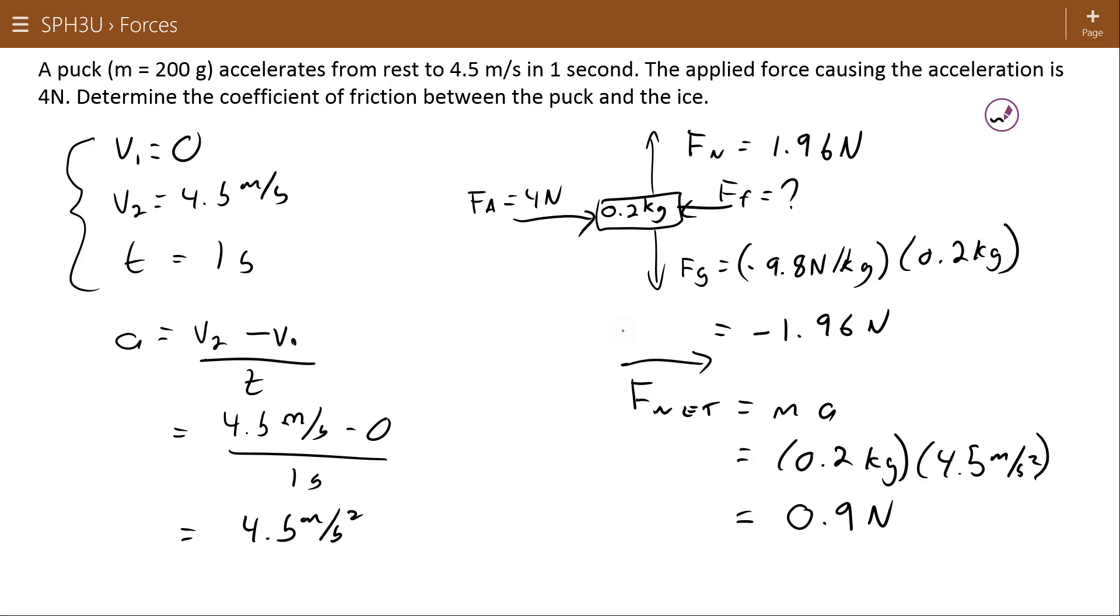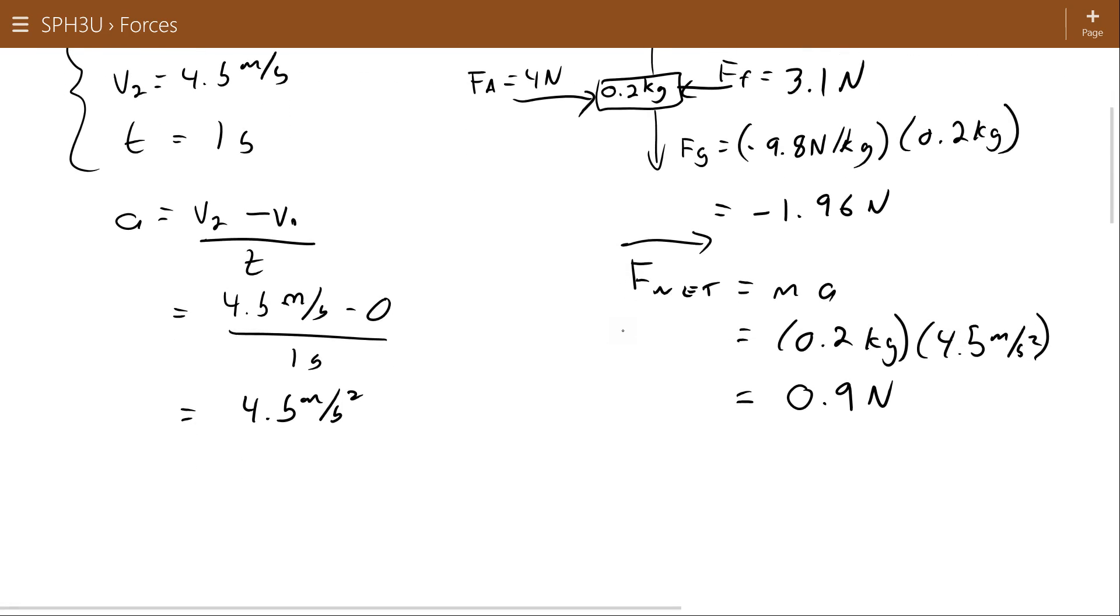So you pushed with 4 newtons, and the result is only a 0.9 newton acceleration. Maybe visually you can see then that the force of friction has to be 3.1 newtons. It resists a lot of that applied force, and then there's a little left over. But if you wanted to do it mathematically, you'd recognize that the net force is equal to the sum of the forces acting on the object, or the applied force, plus the force of friction.